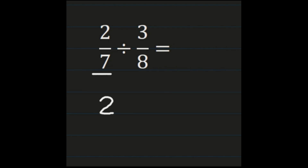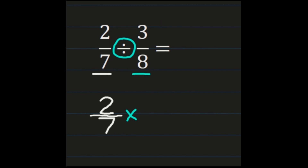So as we show our work, we have 2/7. The next thing that we're looking at is the division sign, and we're going to change that division sign to multiplication. Then we're going to look at the second fraction, the 3/8, and we're going to be multiplying by the reciprocal, which means that our denominator becomes the numerator and the numerator becomes the denominator. Basically we're flipping it over, so we're going to be multiplying by 8/3.